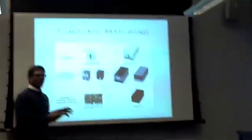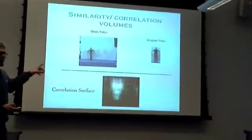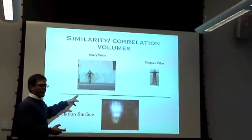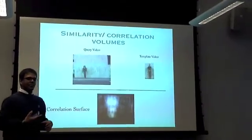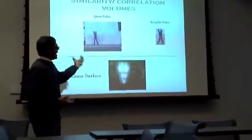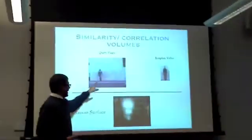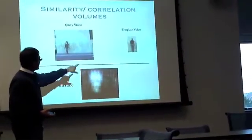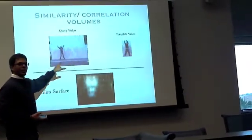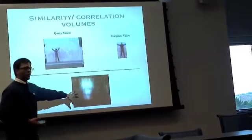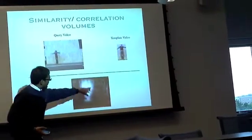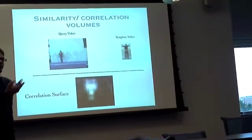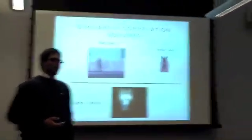When we compare the energy representation of the query video with the energy representation of the search video, we get a measure of how similar the two videos are. The output looks something like a correlation surface. Given a template video — the action of interest — and a longer search video, the part of the correlation surface that brightens up indicates similarity at that point between the template video and the query video.